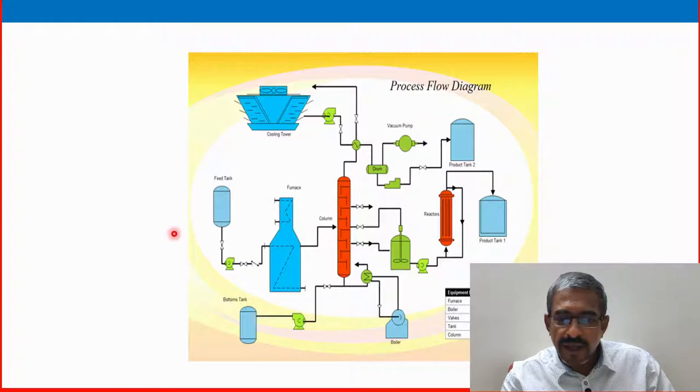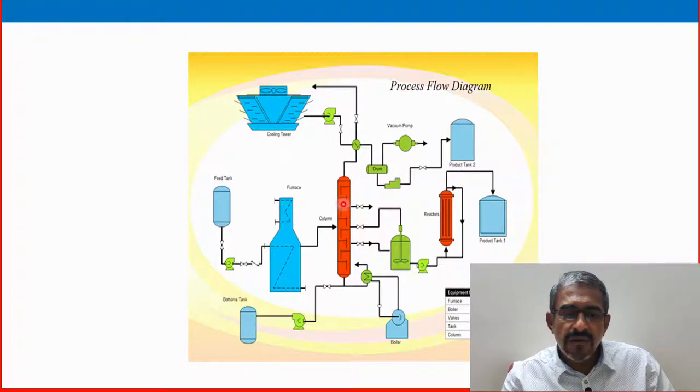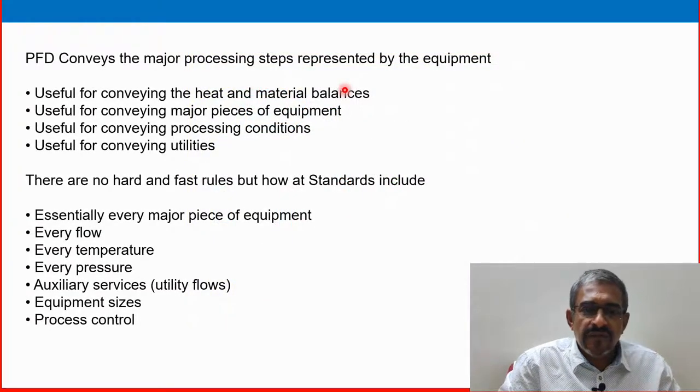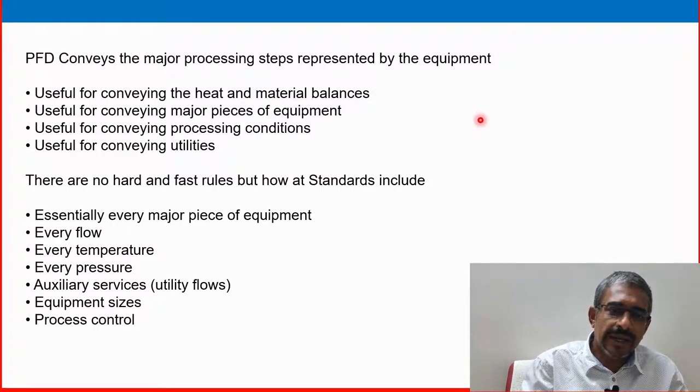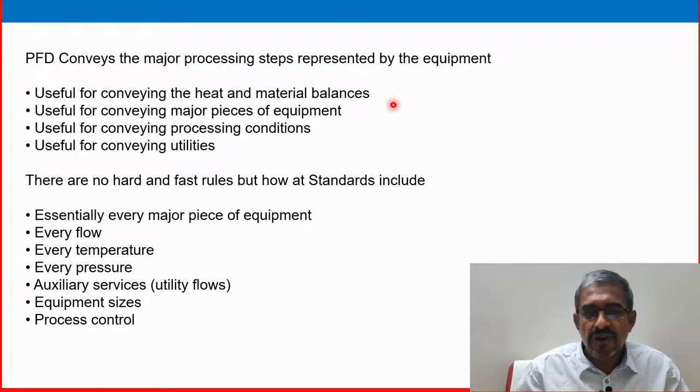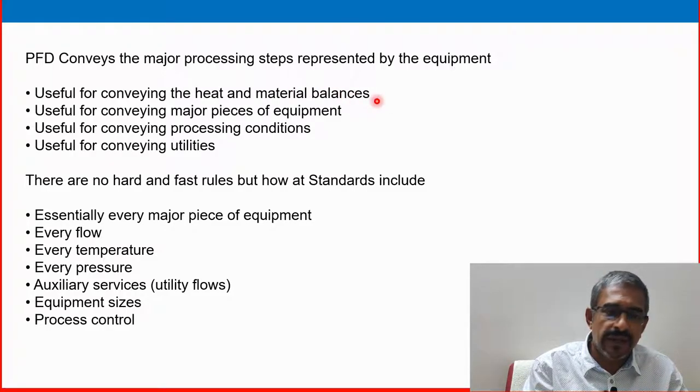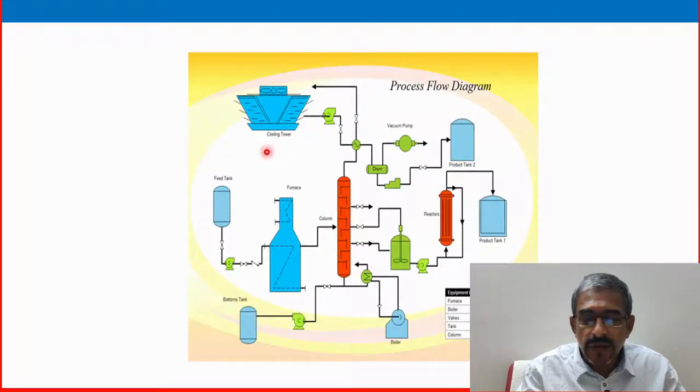This is also another example of a process flow diagram. I am not going to explain this one. I am just taking from Google this one. What are the important features of a PFD? PFD converts the major processing steps represented by the equipment. Useful for conveying the heat and the material balances. Useful for conveying total heat balance and material balance. Useful for conveying major pieces of equipment.